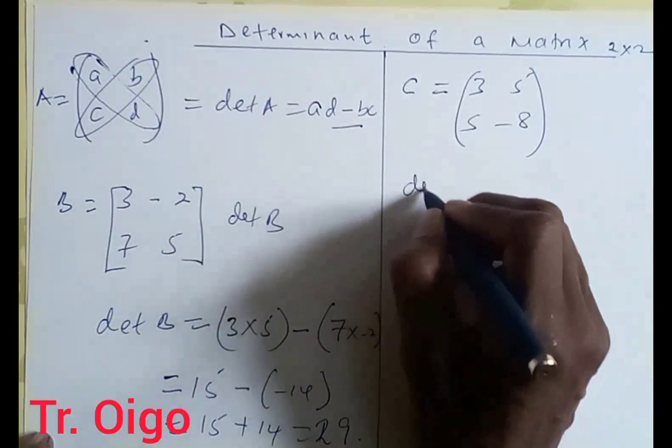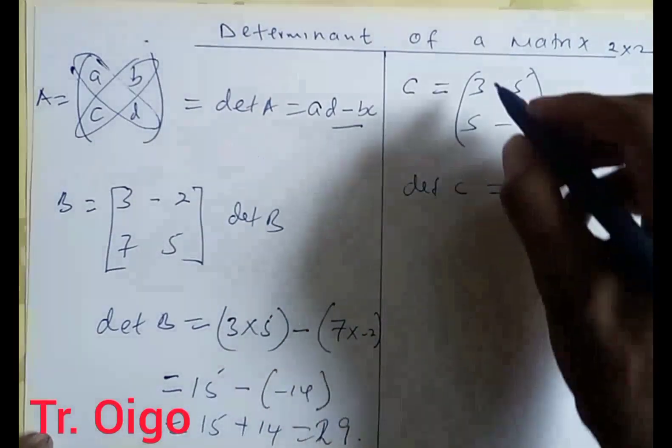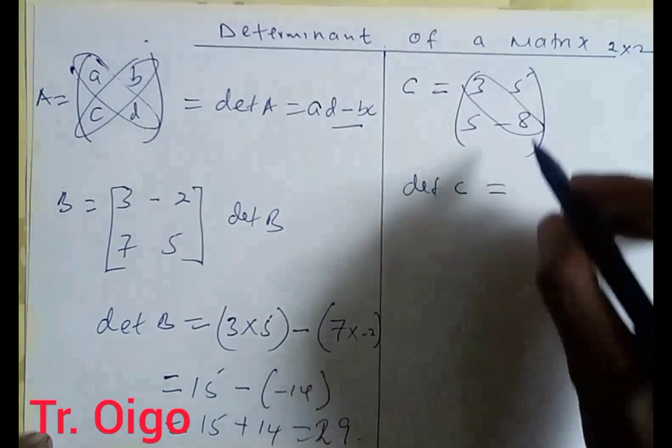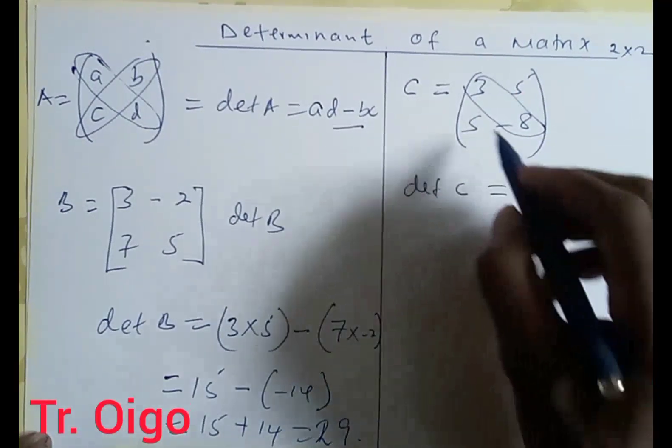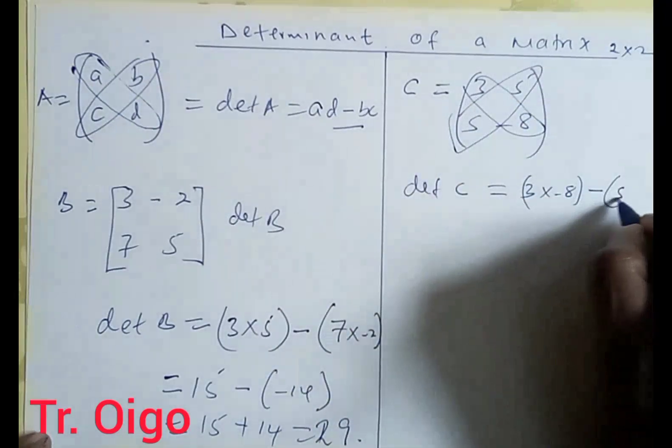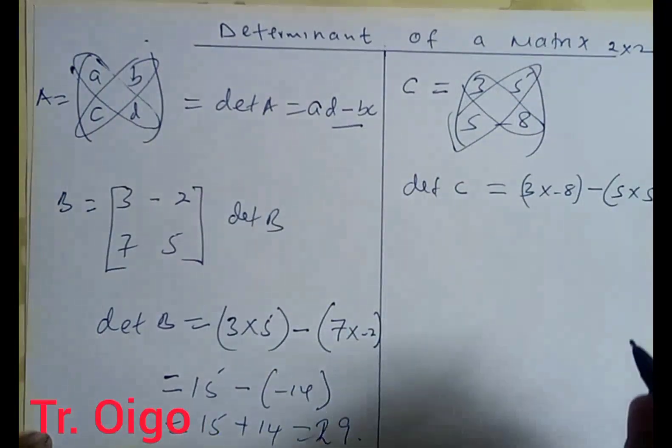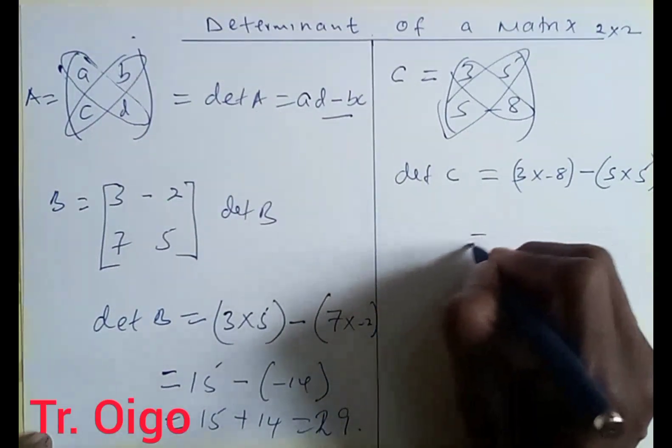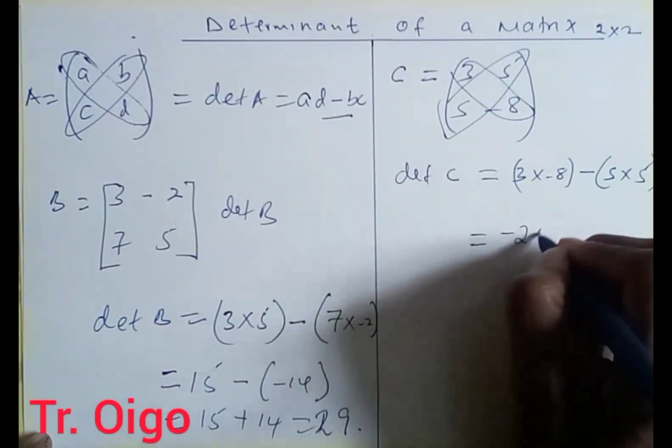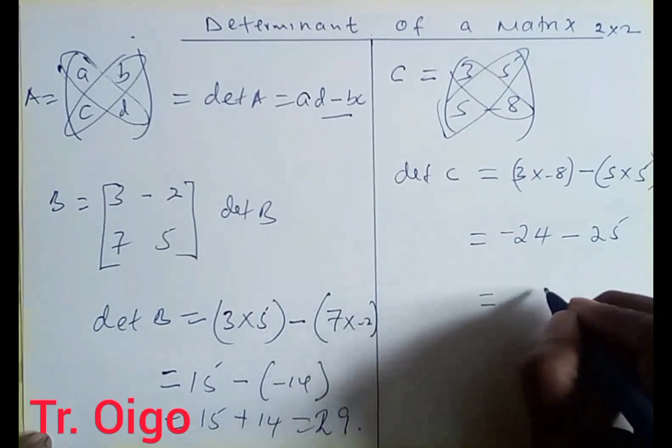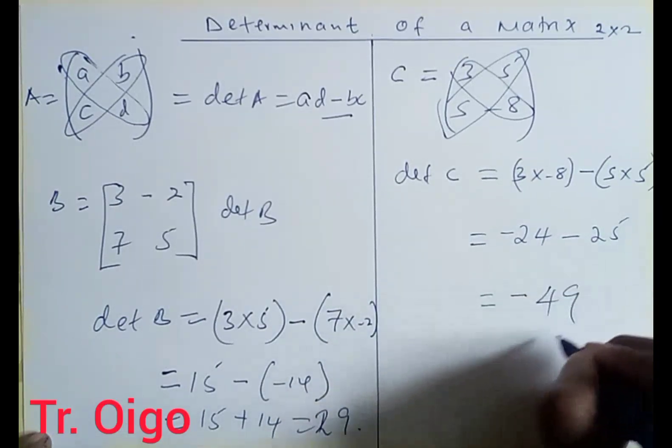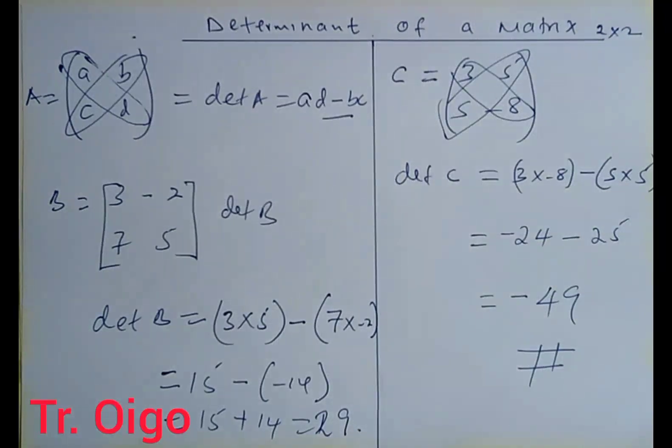Now to work the determinant of C, I'll take the leading diagonal, which is going to be 3 multiplied by negative 8, minus the other diagonal, which is 5 multiplied by 5. If you do this, you're going to have negative 24 minus 25. If you do that, you're getting negative 49. And that's how simple it is to work out a question related to determinant of a 2 by 2 matrix.